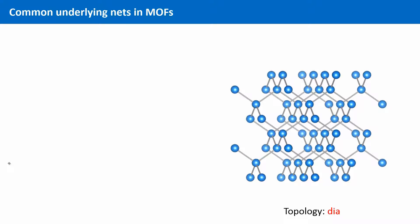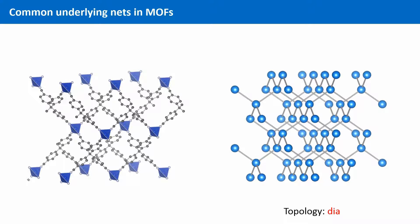This is the DIA net. This is the underlying net of this MOF. You have seen this structure before. Can you remember what it is? Right. This is the structure of diamond and hence the abbreviation DIA.